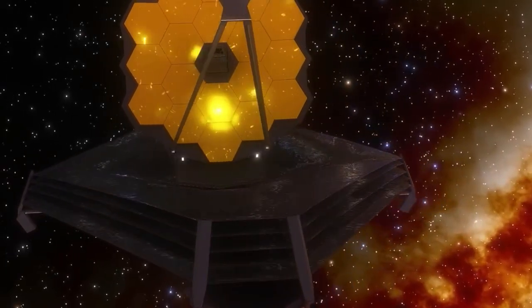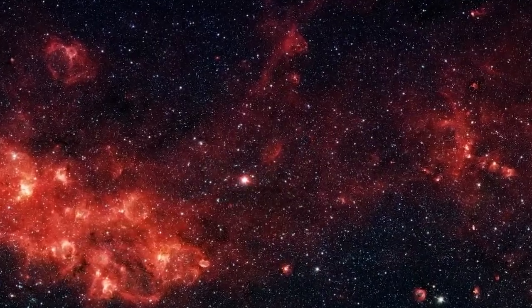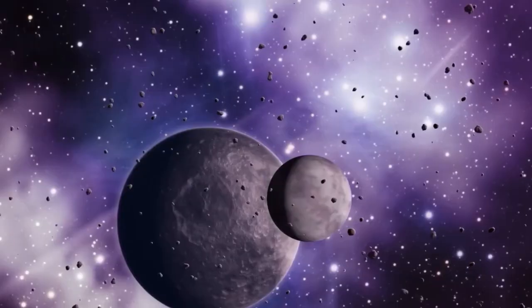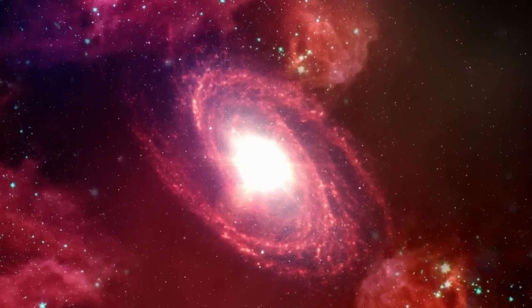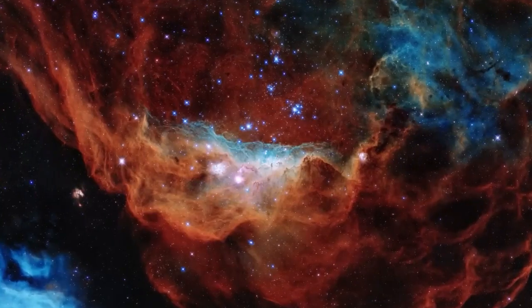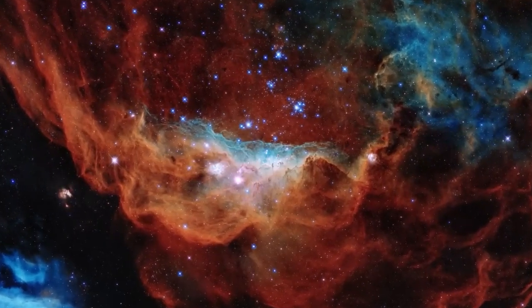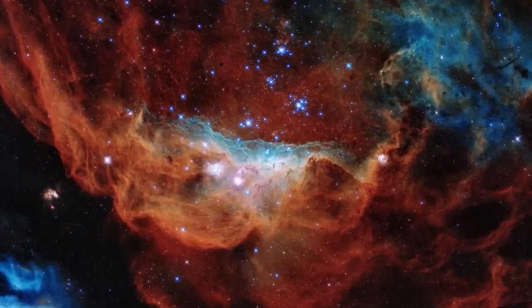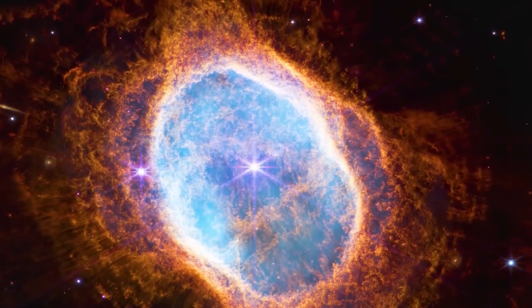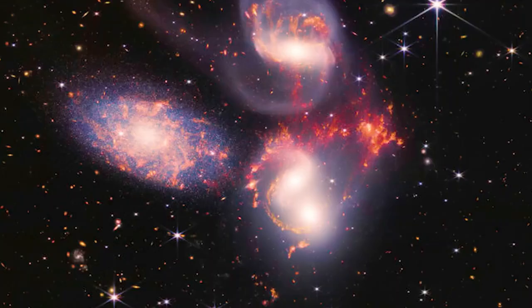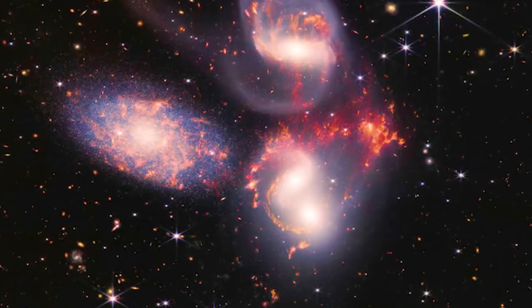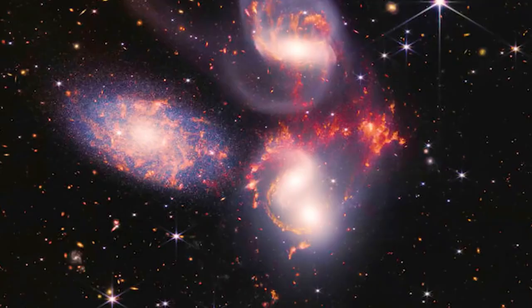This distant galaxy formed 460 million years after the Big Bang, appearing as a hair-thin crescent stretched across space. Its visibility comes courtesy of a massive foreground galaxy cluster, positioned precisely in proper alignment between us and this ancient galaxy. This cosmic arrangement magnifies the light brightness hundreds of times, transforming barely visible smudges into detailed structures where individual star clusters become distinguishable.